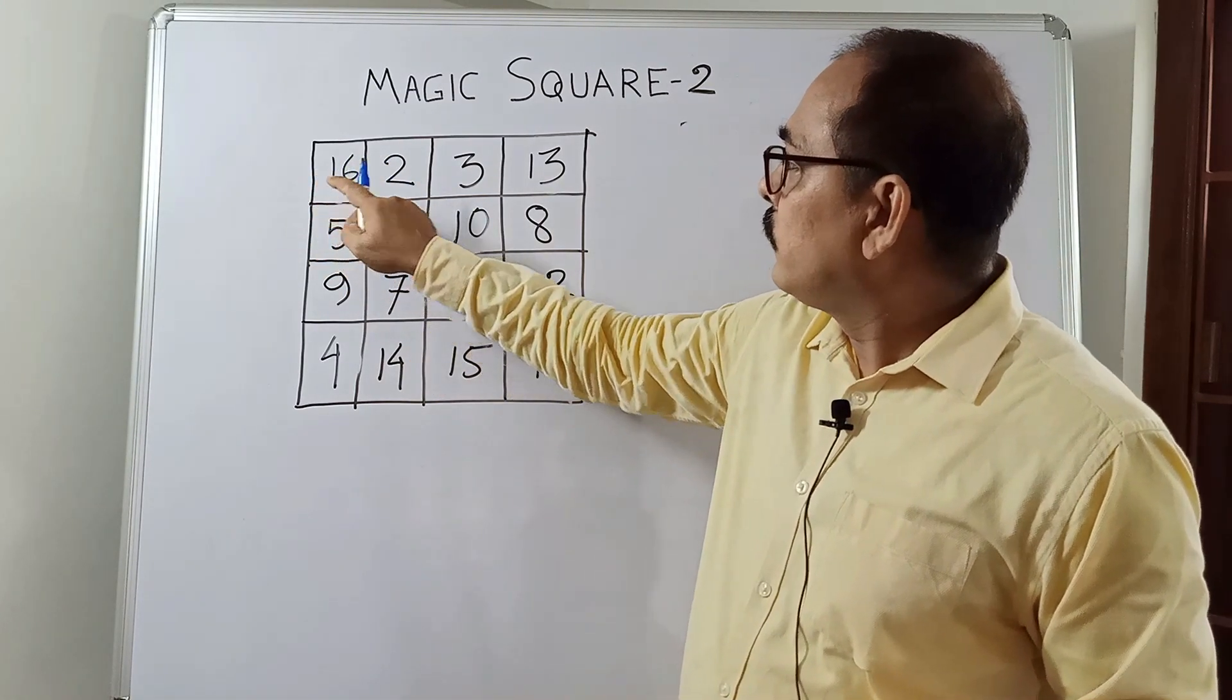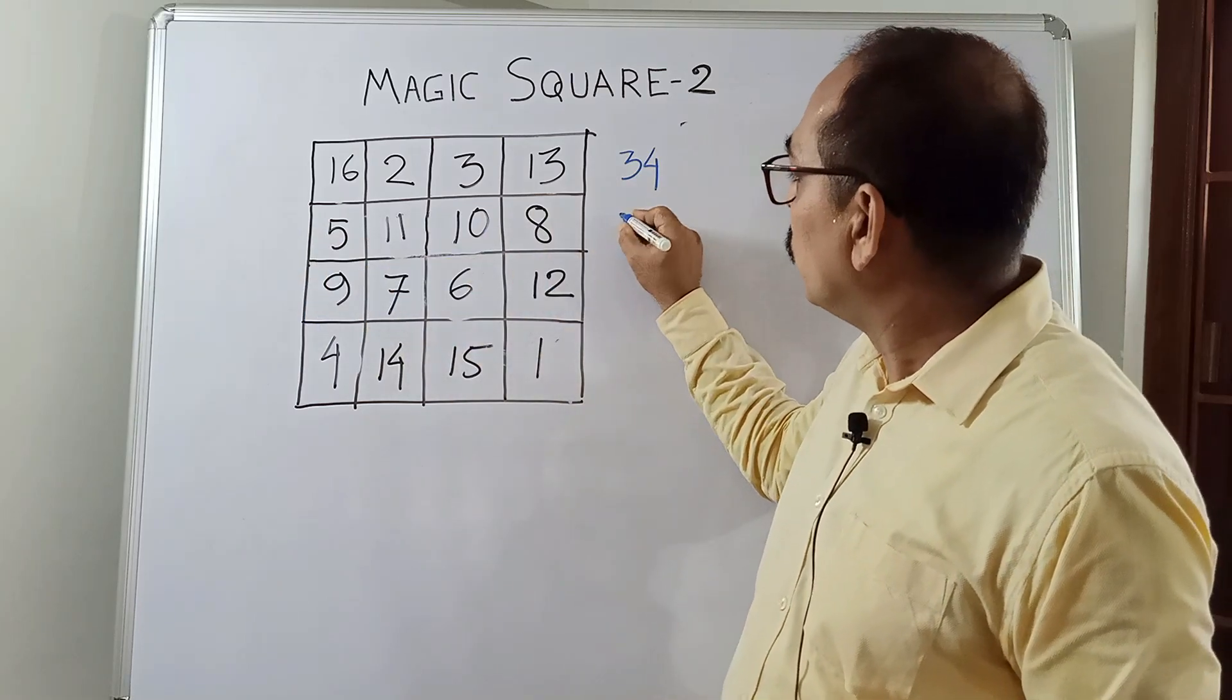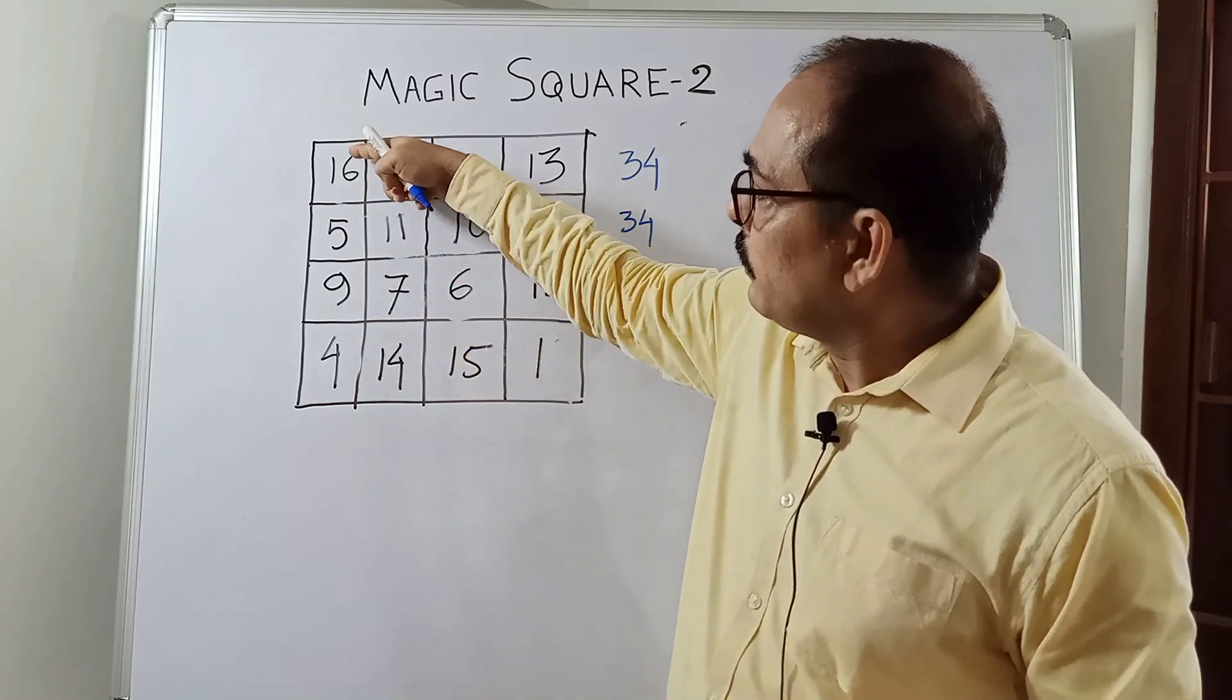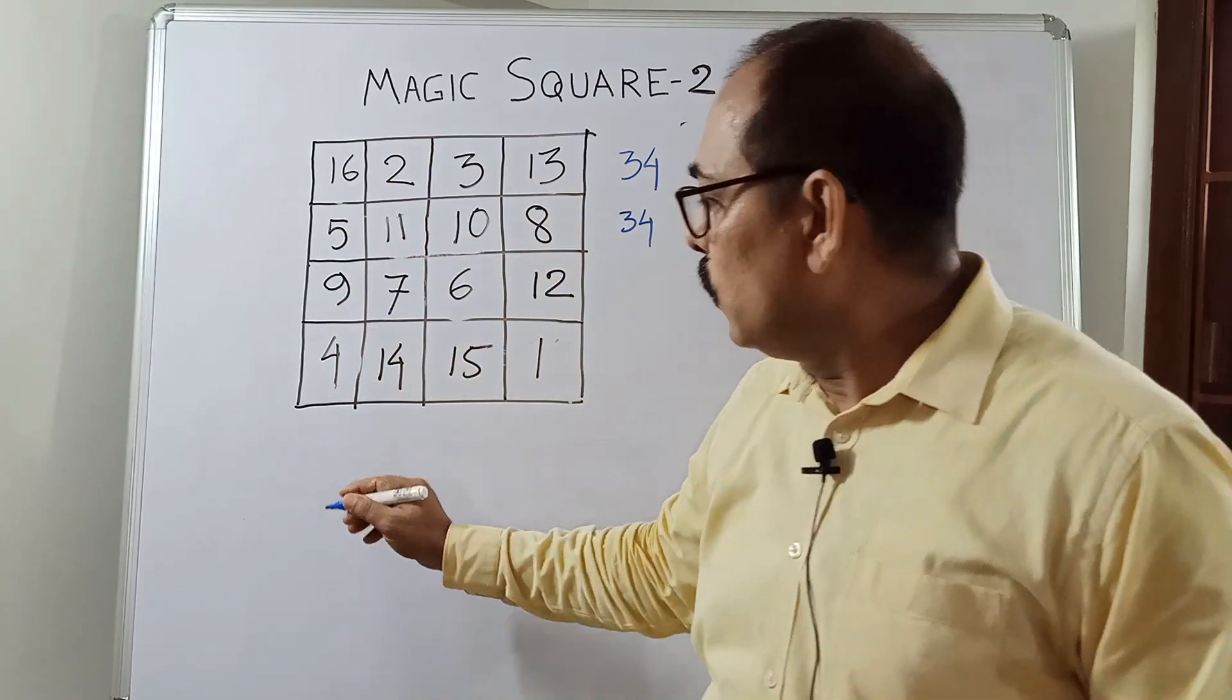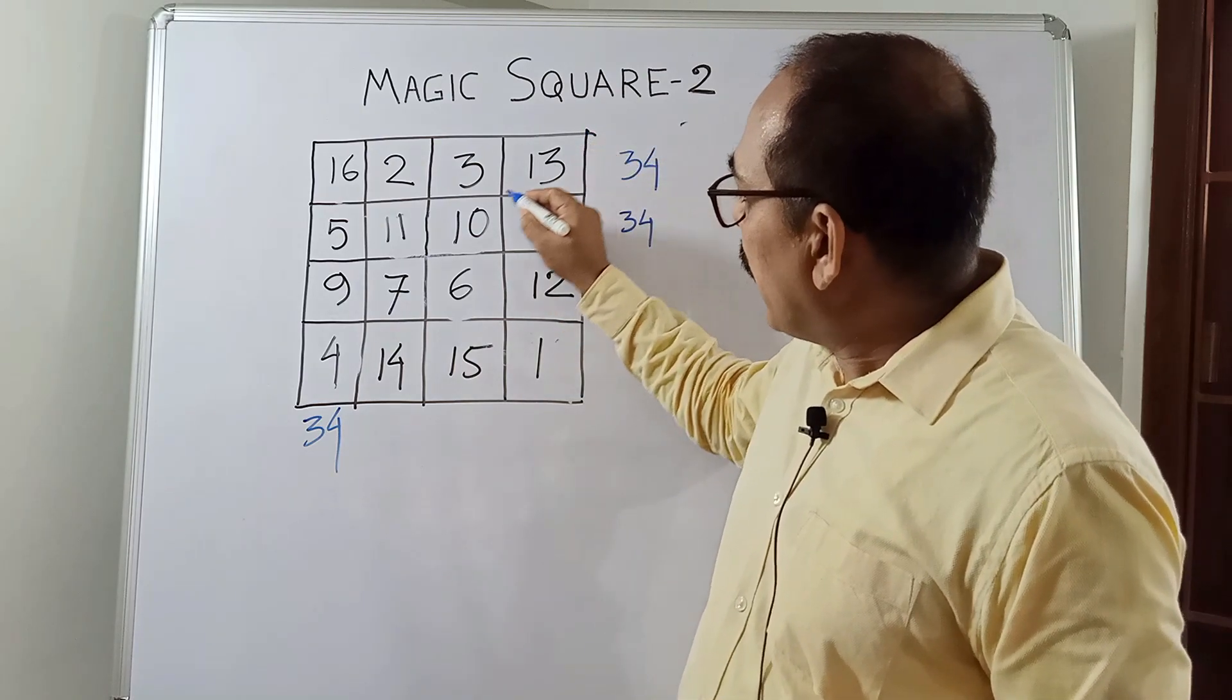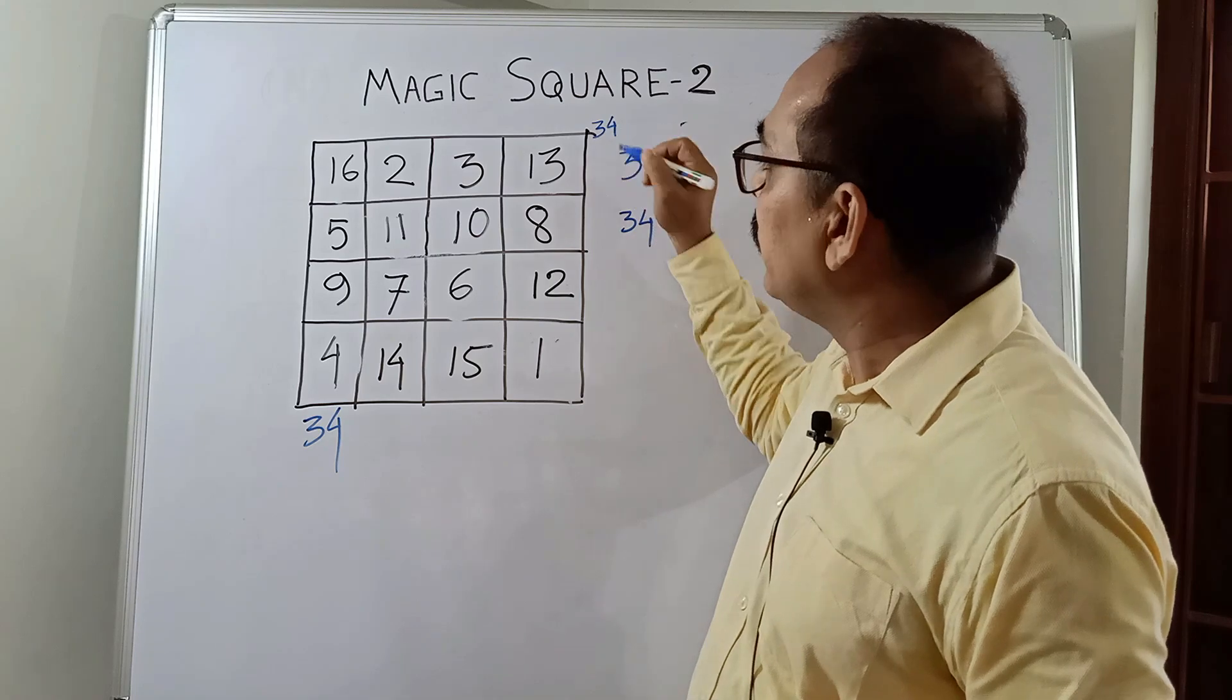Now, the sum here, 16 plus 2 plus 3 plus 13, that is equal to 34. Same way, the second row also, the sum is coming 34. All the rows sum will come 34. Same way, the column wise, 16 plus 5, 21, plus 9, 30, 30 plus 4, 34. So in all the columns, the sum is coming 34. In diagonal also, 7 plus 4, 11 plus 10, 21 plus 13, diagonal sum is also coming 34.